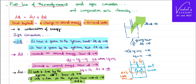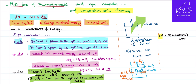This is the standard sign convention we follow with the first law of thermodynamics, which states that the total heat energy supplied to the system equals the sum of the change in internal energy and the external work done by it. However, be careful — if thermodynamics is also taught in chemistry in your plus-one and plus-two courses, they follow a slightly different sign convention. For DU, they follow the same sign convention.